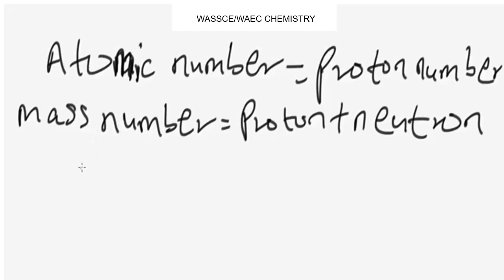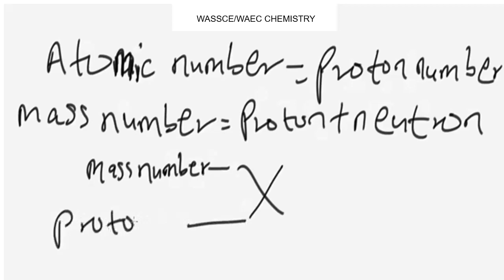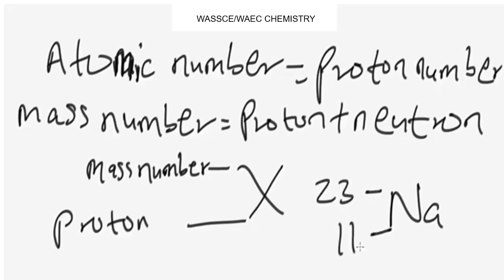Now let's look at how to represent atoms — a typical symbol of an atom. An atom is generally represented with the mass number shown at the top left and the atomic number or proton number shown at the bottom left. A simple example is sodium: the mass number is 23 and the atomic number or proton number is 11.